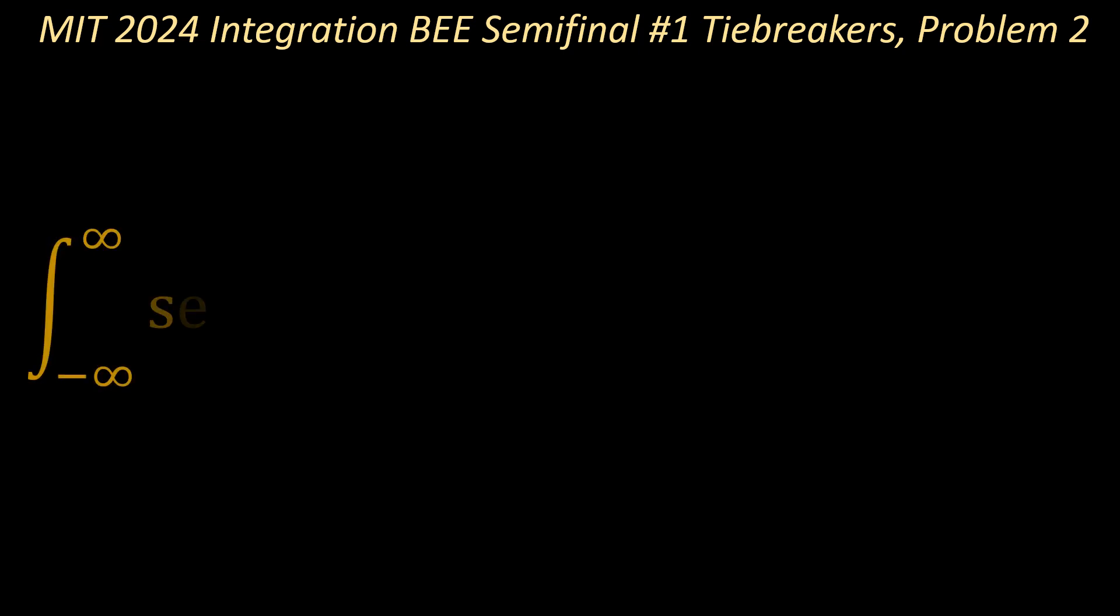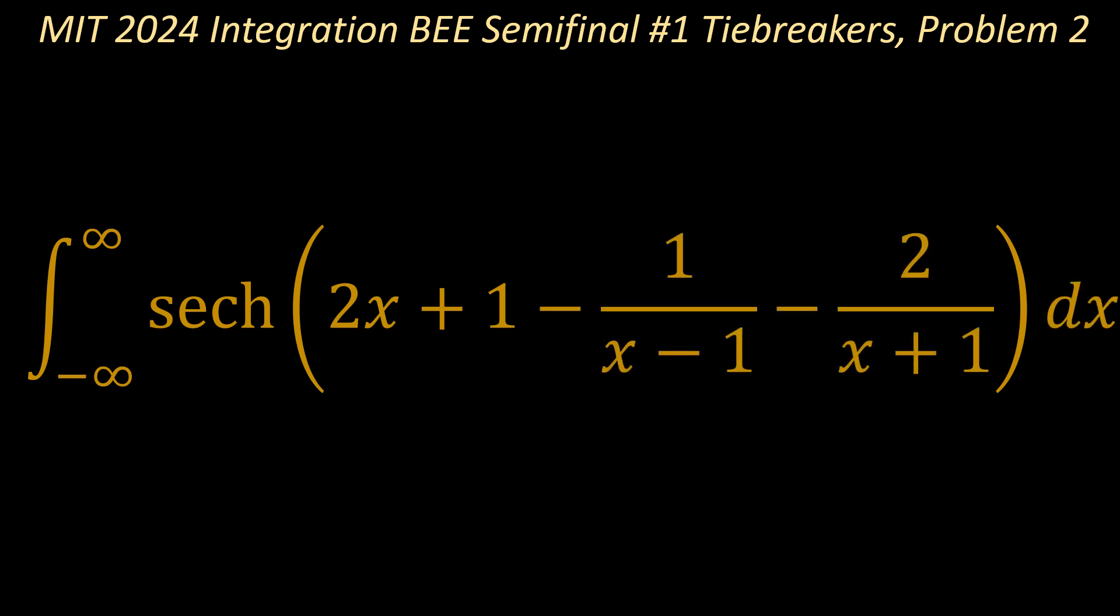This is the definite integral from x tending to negative infinity extending to positive infinity of the hyperbolic secant of 2x plus 1 minus 1 over x minus 1 minus 2 over x plus 1.